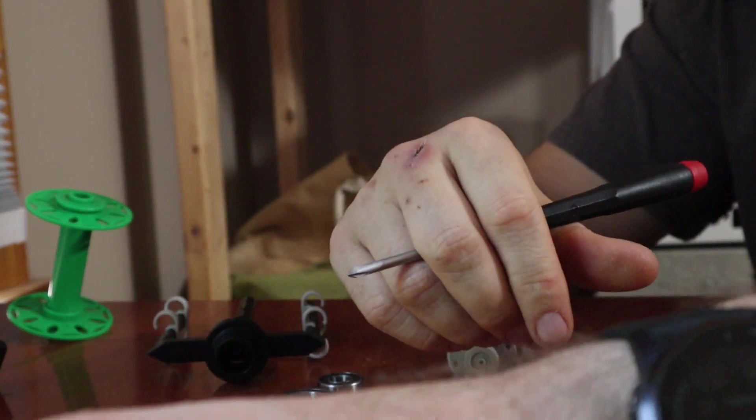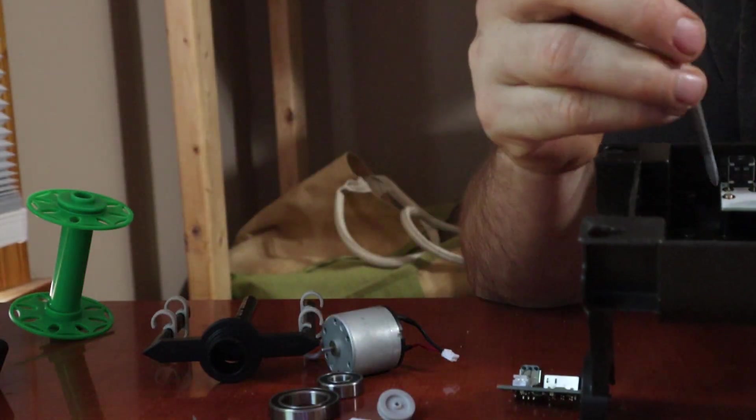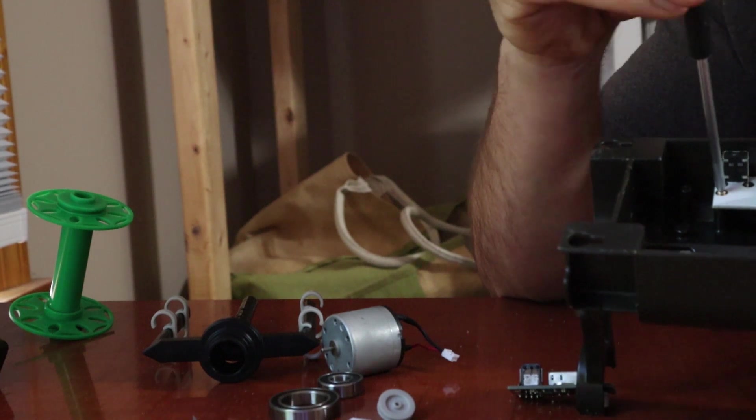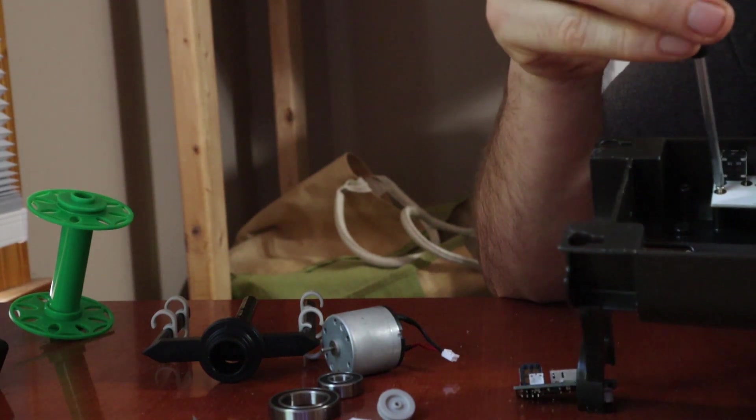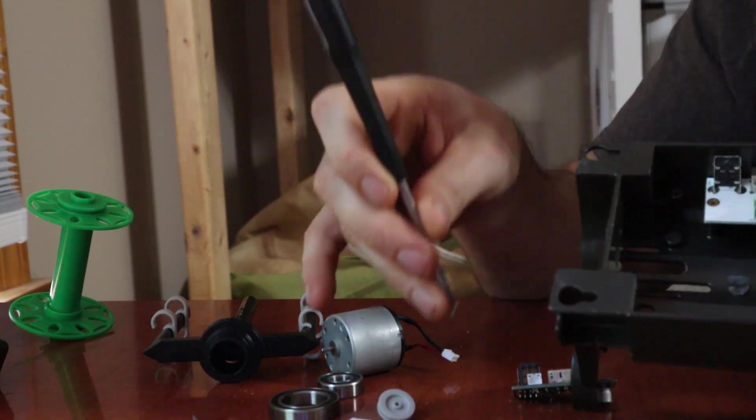Okay so you can set aside the motor and next you'll just want to take out the circuit board. So you're taking the Phillips screwdriver and taking out these two screws that hold it in place.